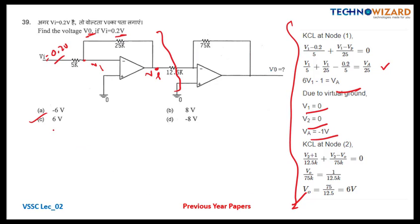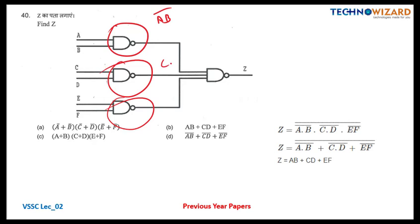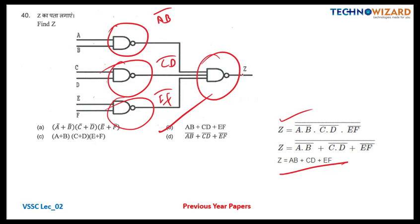Question number 40, the last question in this video: a simple NAND gate combination circuit. We have AB-bar, CD-bar, and EF-bar as outputs from three NAND gates going into a triple-input NAND gate. Applying De Morgan's theorem: the final output is AB + CD + EF — option B is the correct answer. If you have any doubts, ask in the YouTube comments. See you in part three — bye!